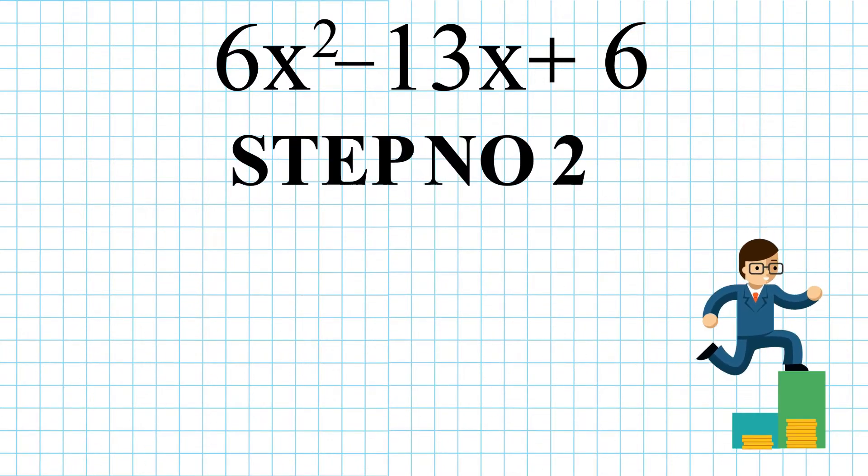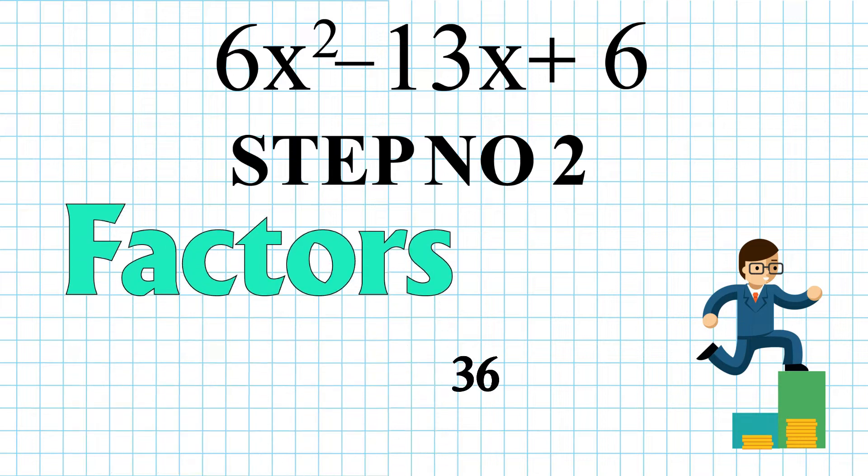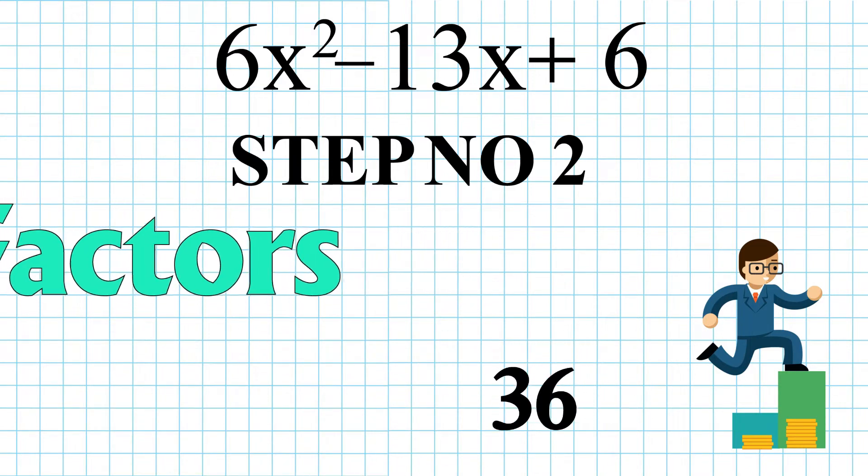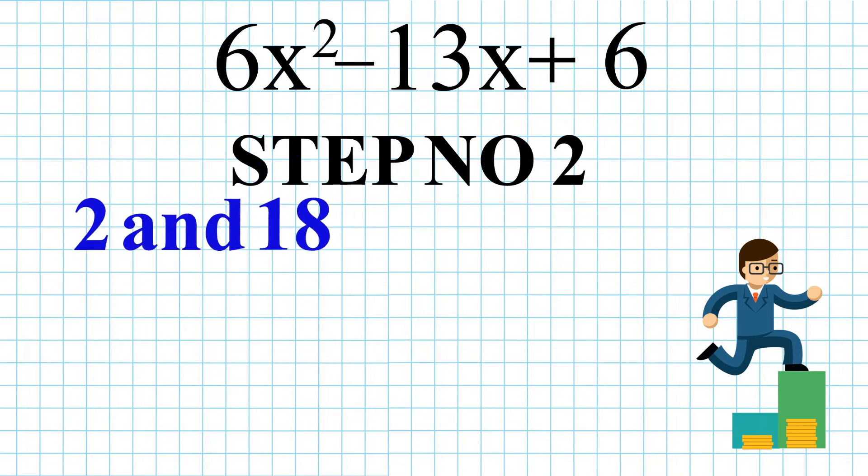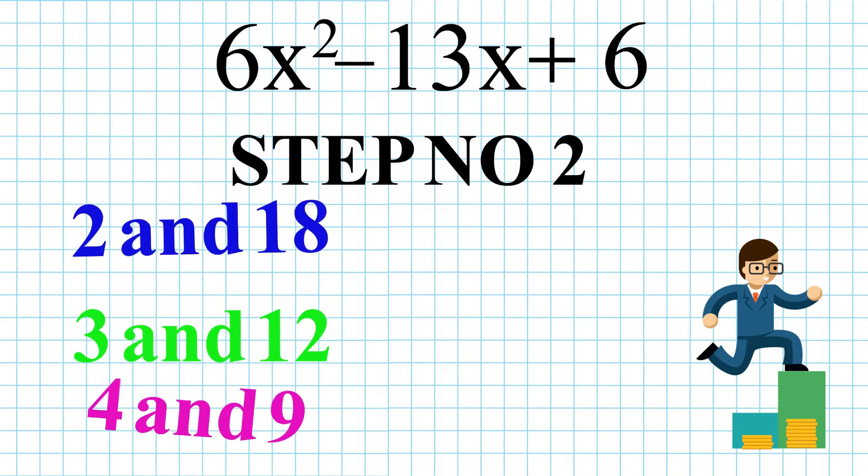Find all the possible pairs of the factors of 36. The pairs of the factors would be 2 and 18, 3 and 12, 4 and 9.